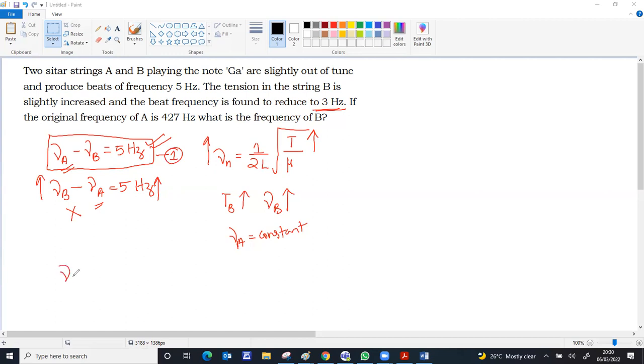So A minus B equals 5 hertz. A is given as 427 hertz. Therefore, 427 minus 5 equals B, so B equals 422 hertz.